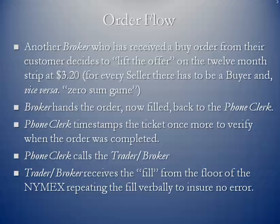Another broker who has received a buy order from their customer decides to lift the offer — that's what we call it — lifting the offer on the 12-month strip at $3.20. In order for the producer to find a market, there has to be a buyer. For every seller there has to be a buyer; it's a zero-sum game. The broker representing the producer hands the filled order back to the phone clerk, who timestamps the ticket again to verify when the order was completed — so there's a timestamp for when the order was received and one for when it was consummated in the pits.